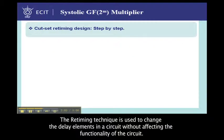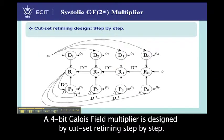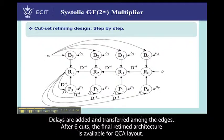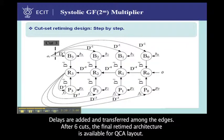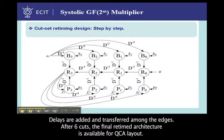The retiming technique is used to change the delay elements in your circuits without affecting the functionality of the circuits. A 4-bit Galois field multiplier is designed by systolic array retiming step-by-step. Delays are added and transferred among the edges. After the iterations, the final retimed architecture is available for QCA layout.